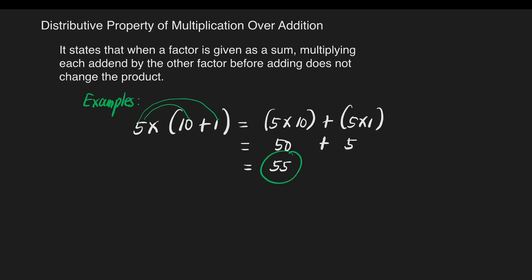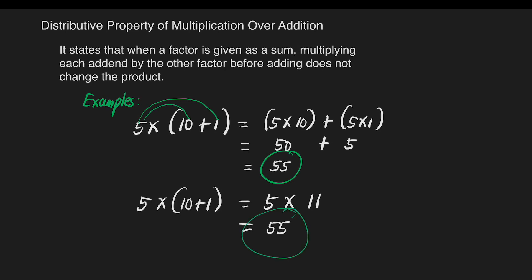Or, we can write it as 5 times the quantity of 10 plus 1. We will add first what's inside the parenthesis: 10 plus 1 is equal to 11. Next, 5 times 11 will give us a product of 55. So the answer is the same.